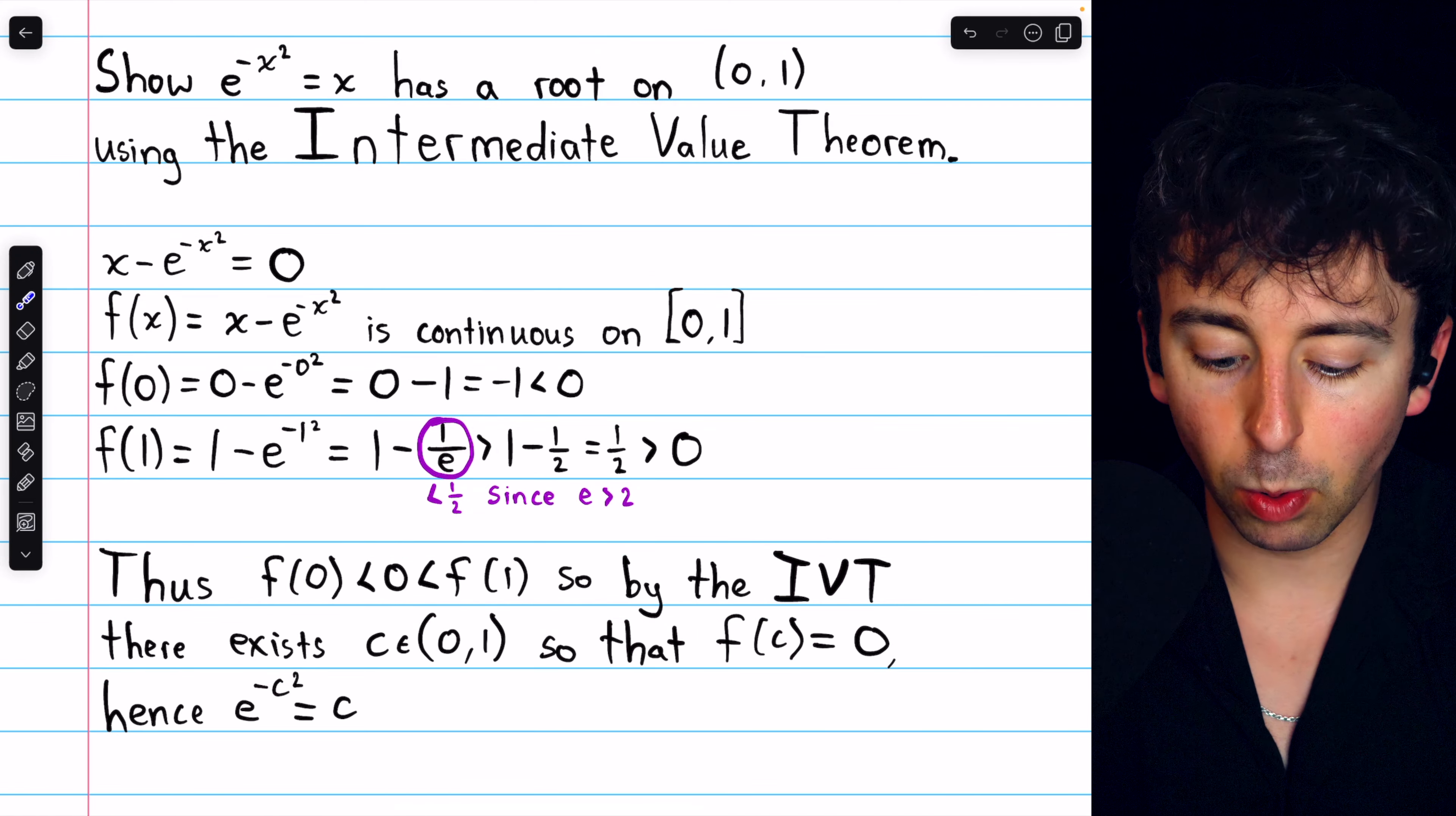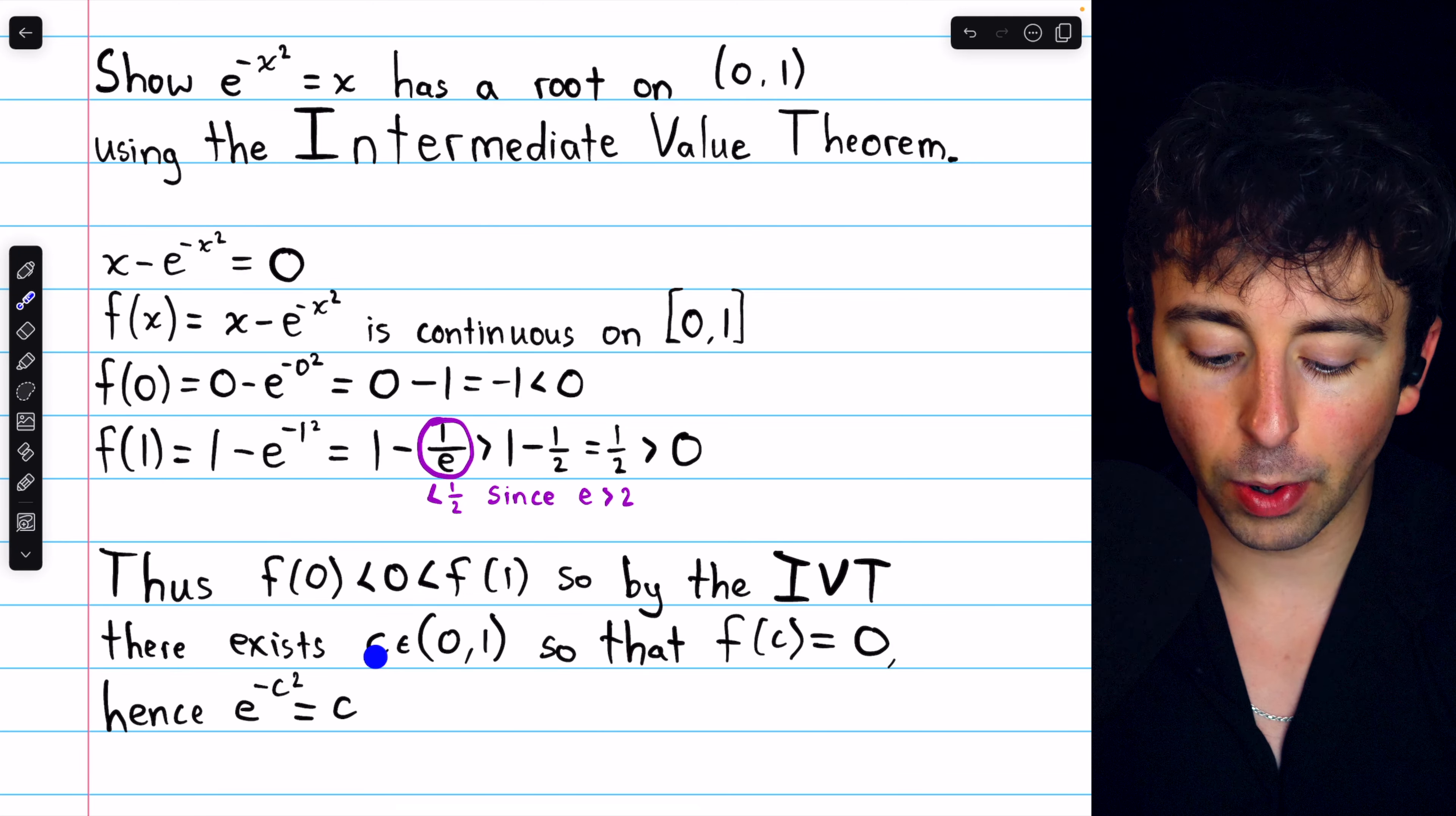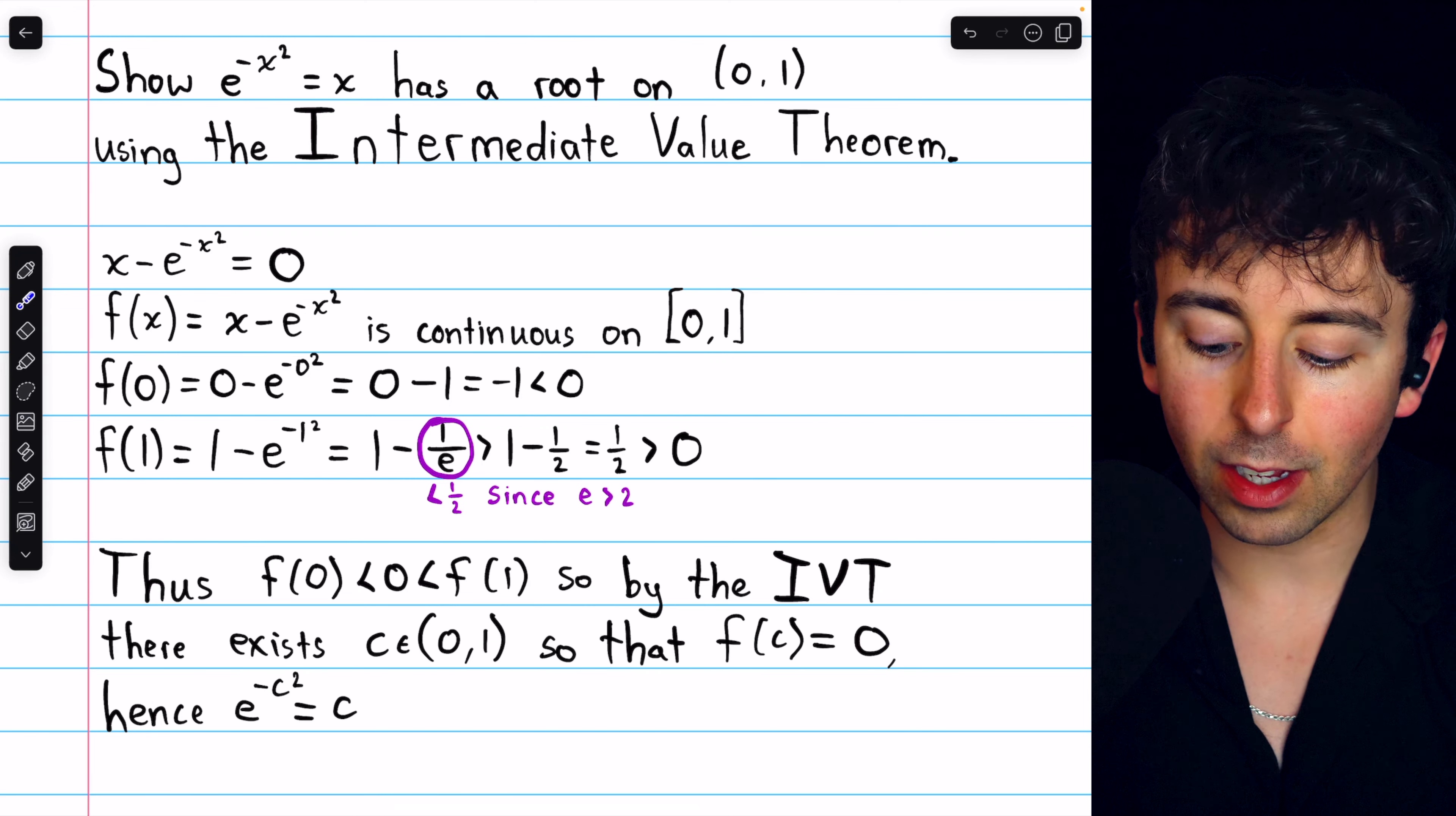So, since 0 is between the endpoints of our function on this interval, by the Intermediate Value Theorem, there must exist some point c in the interval from 0 to 1 so that f of c equals 0.